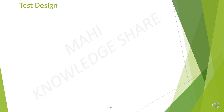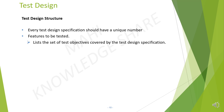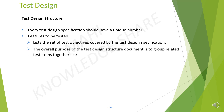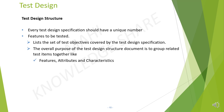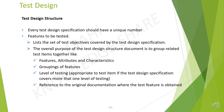Overview of test design structure. Every test design specification should have a unique number. Then list out the features to be tested. List the set of test objectives covered by the test design specifications. The overall purpose of the test design structure document is to group related test items like features, attributes, and characteristics; groupings of features; levels of testing; and reference documents to the original documentation where the test feature is obtained.